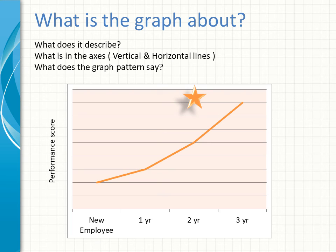The first thing we should look at is what does the graph describe? And then another thing which I have explained earlier, what is in the axes, that's the vertical side and the horizontal side? And then what does the graph pattern say? If you look at this graph pattern you will notice that the line keeps going upward.